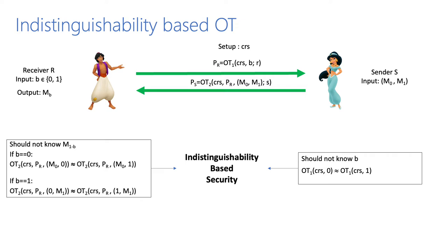Let me briefly recall the security properties of indistinguishability-based OT. The corrupt receiver should not know M_{1-B} and the corrupt sender should not know B. This can be modeled as follows: if the receiver's choice bit is 0, it should not be able to distinguish a sender's message when M1 is 0 from the case where M1 is 1. For a corrupt sender, it should not be able to distinguish when the receiver's choice bit is 0 from the case where it is 1. This is IND-OT, or indistinguishability-based OT.